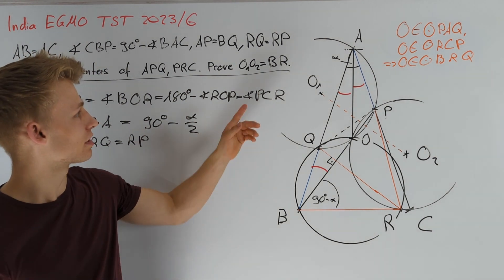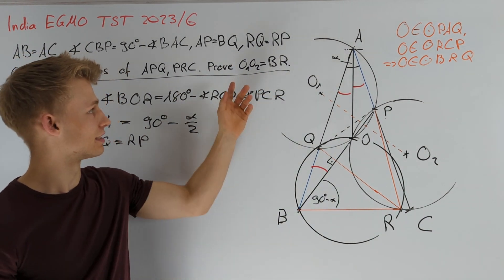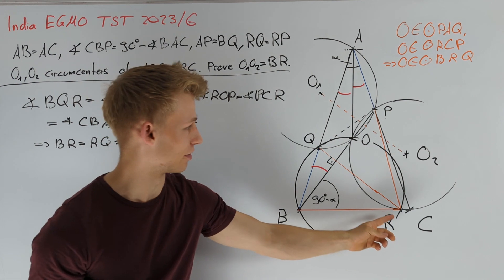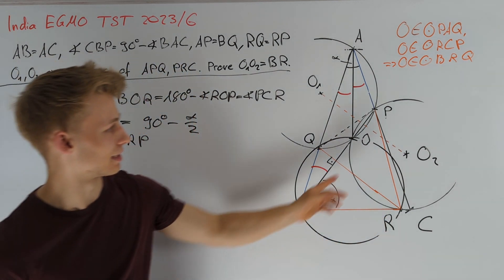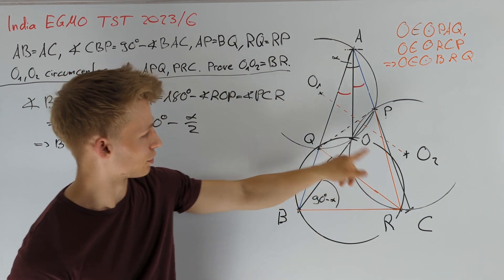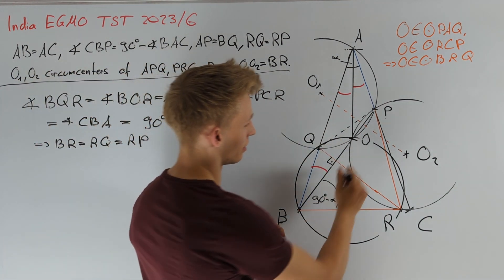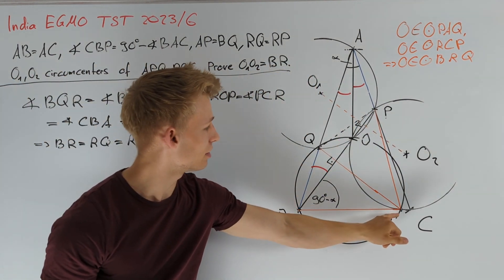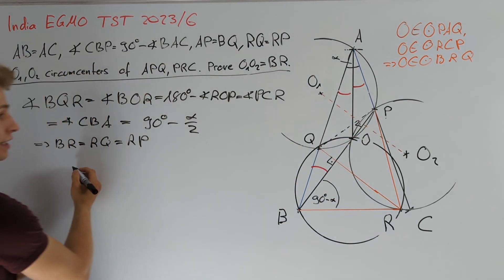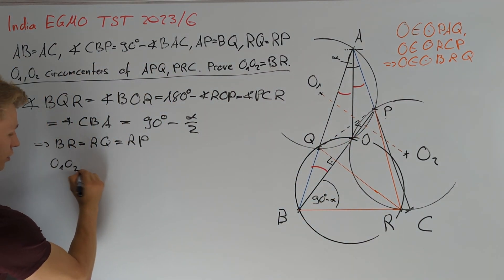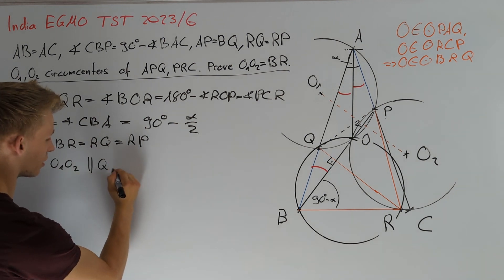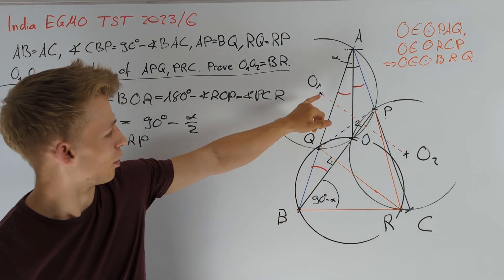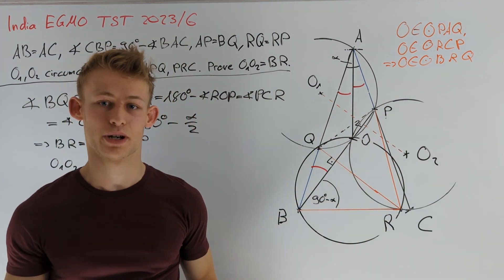Now we are ready to look at the statement we want to prove. This equation is equivalent to O1O2 equals QR. Since PO is the radical axis of the two circles, line O1O2 must be perpendicular to line PO. Since QR is also perpendicular to PO, we get that O1O2 is parallel to QR. Thus, to prove these two lengths are equal, it is enough to prove that O1QRO2 is a parallelogram.